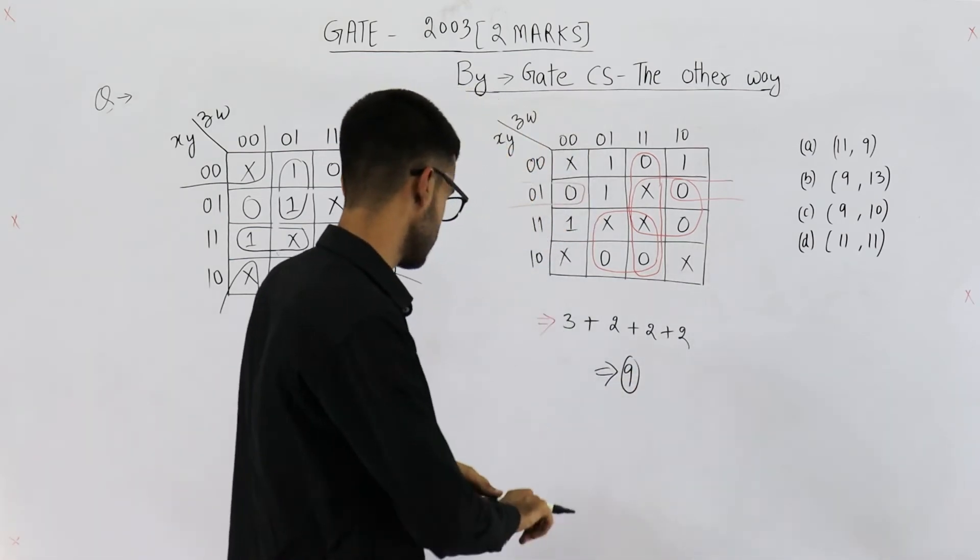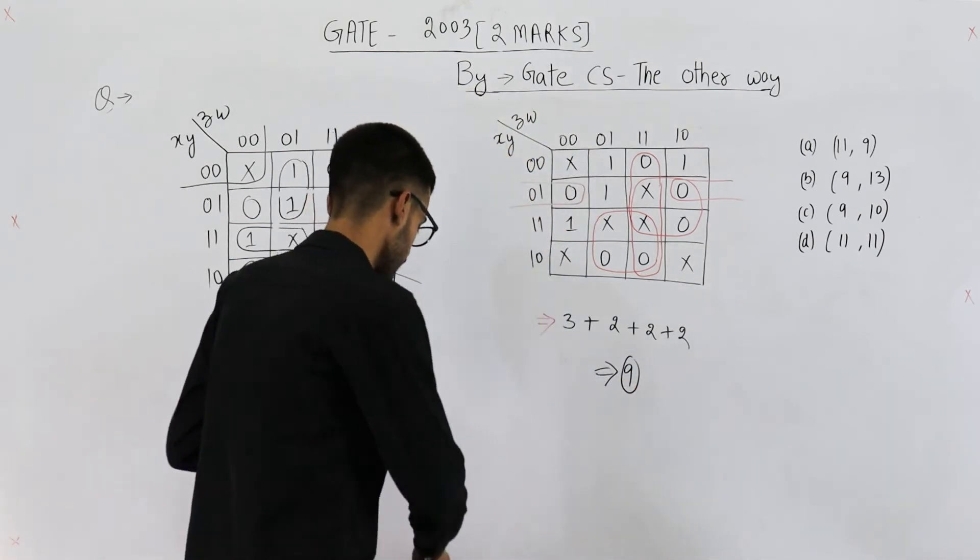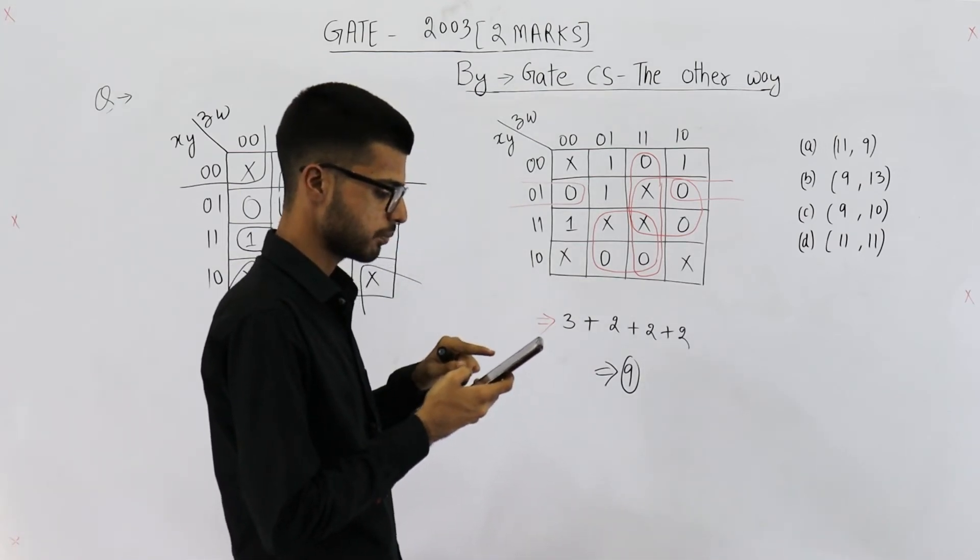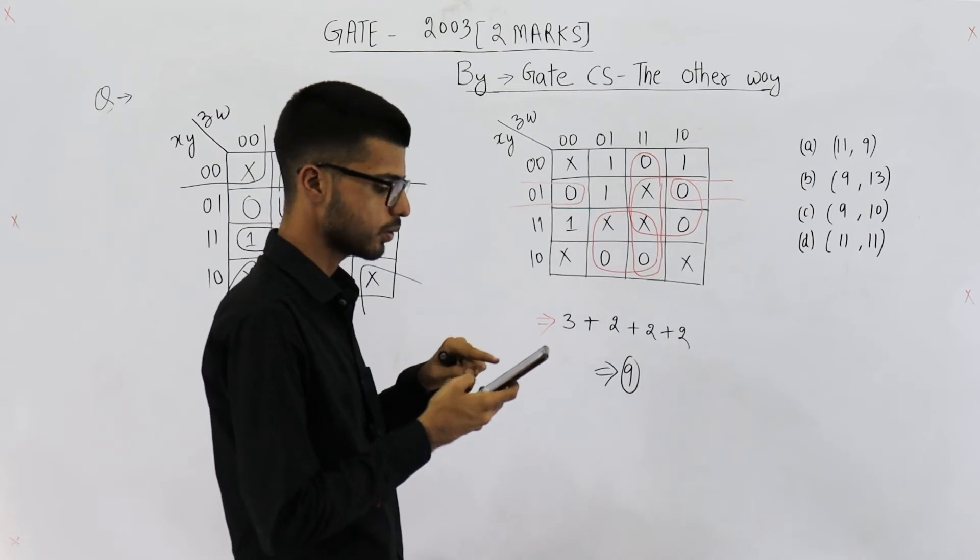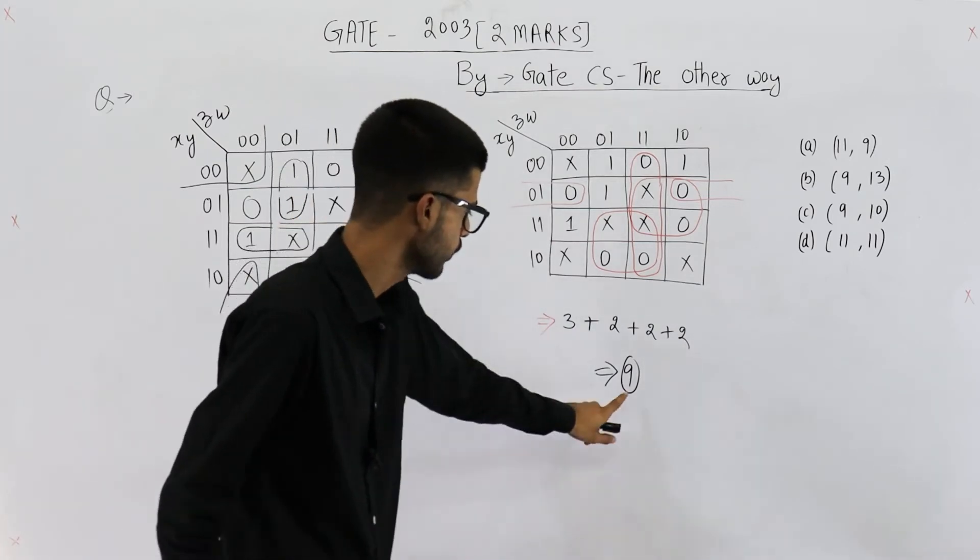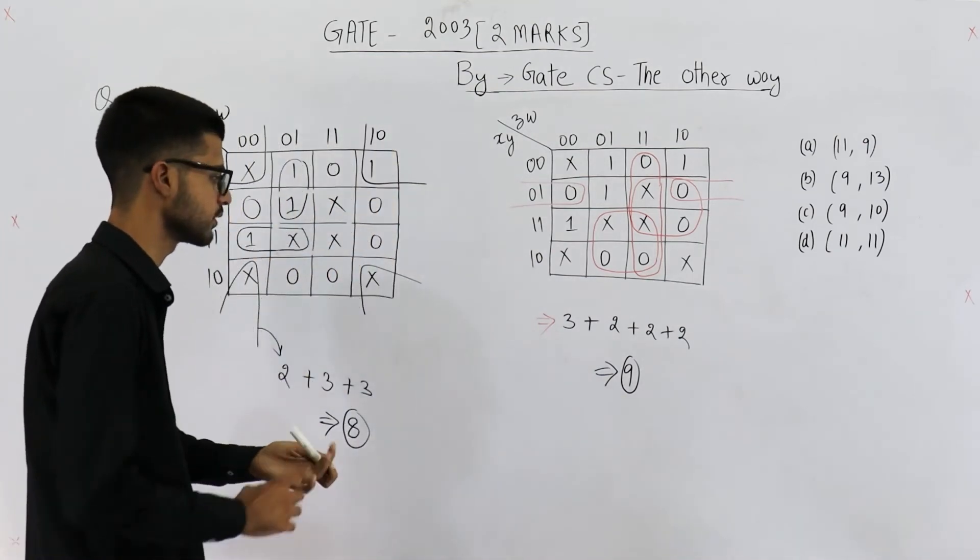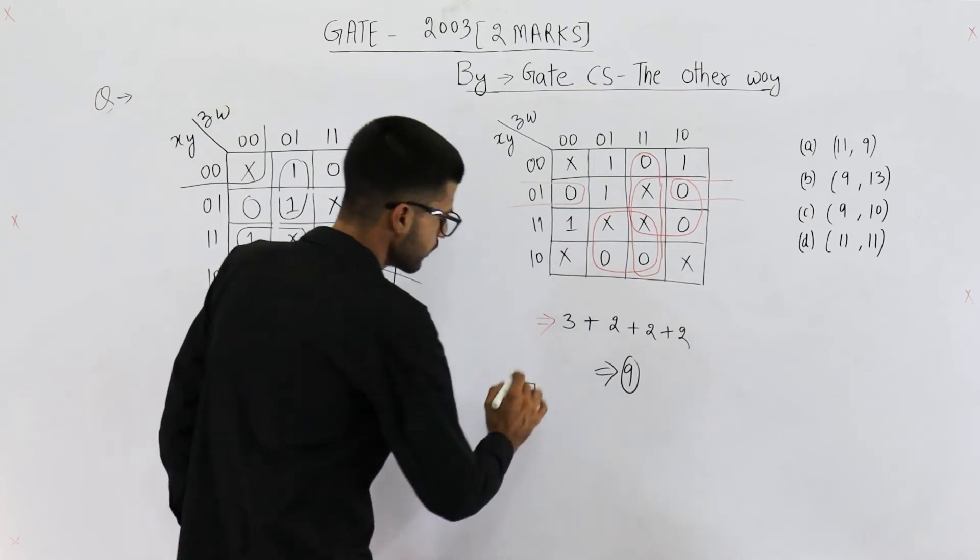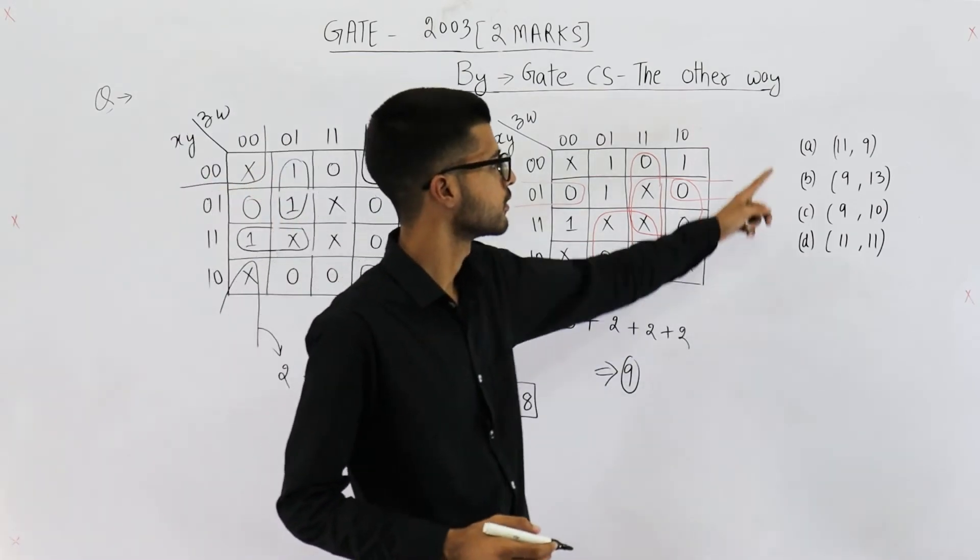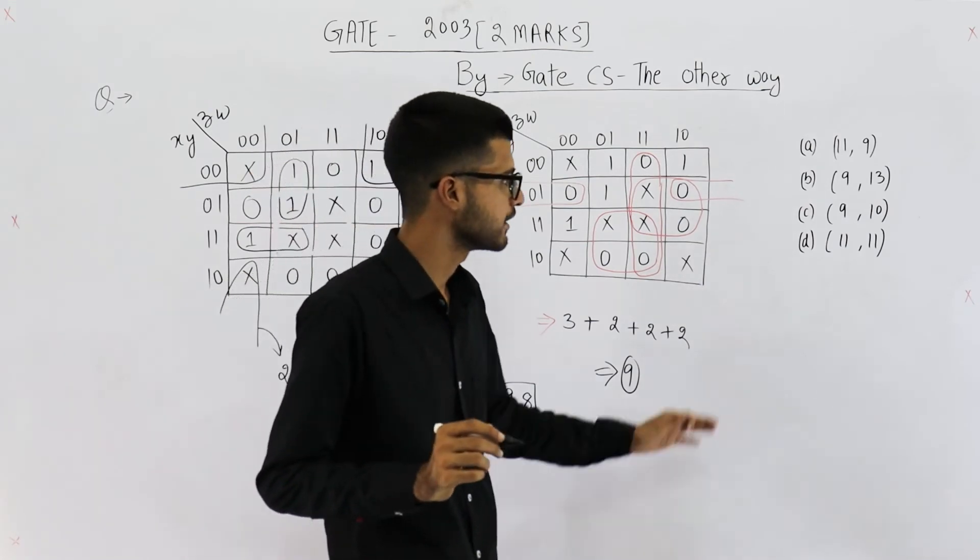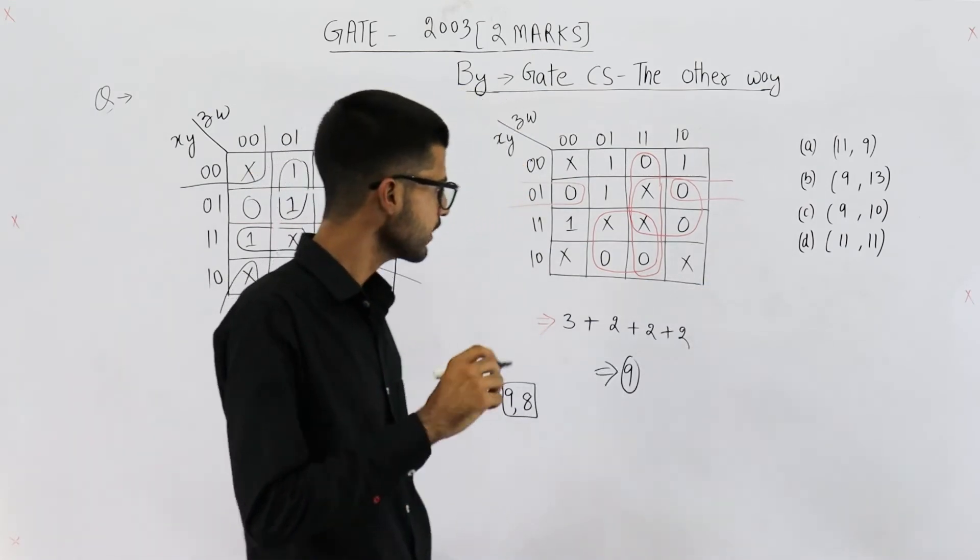So, they were asking what is the minimum possible literal counts of POS and SOP? So, first of all, we need to write down POS which is nine then SOP which is eight. Answer is nine comma eight. You can see nine comma eight is not present in the options. So, there's a small mistake in this question. They haven't mentioned the correct answer. Anyways, it was a good question.